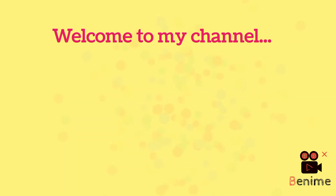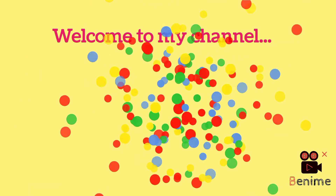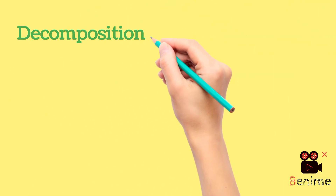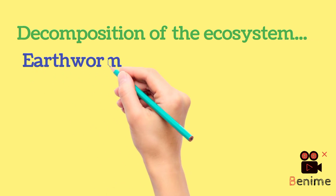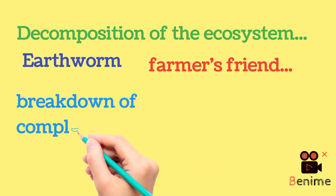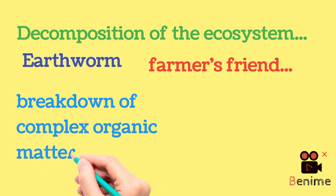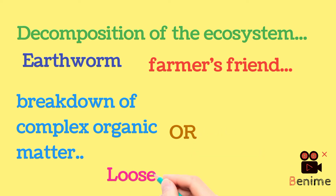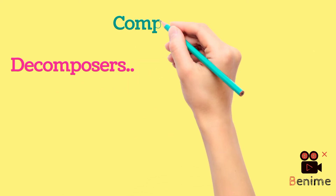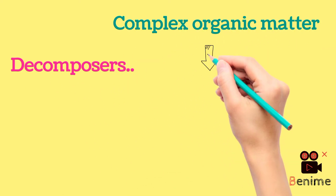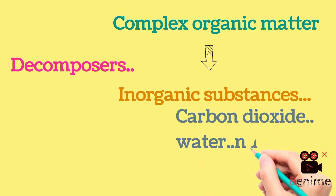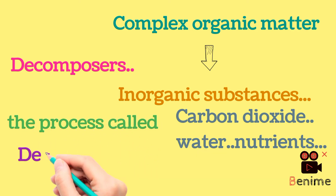Welcome to the channel. In the last video we talked about productivity of the ecosystem, and now we are going to talk about decomposition. You may have heard of the earthworm being referred to as the farmer's friend, because they help in the breakdown of complex organic matter and loosening of the soil. Similarly, decomposers break down complex organic matter into inorganic substances like carbon dioxide, water, and nutrients — and this process is called decomposition.